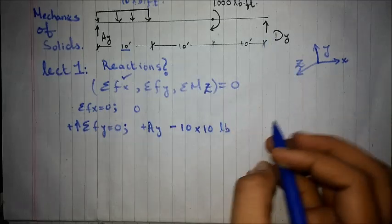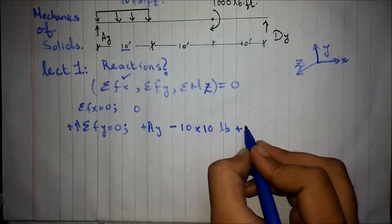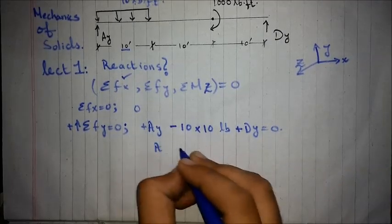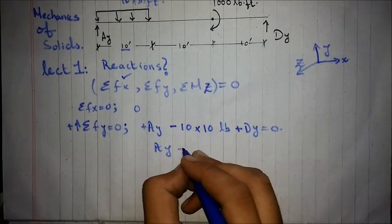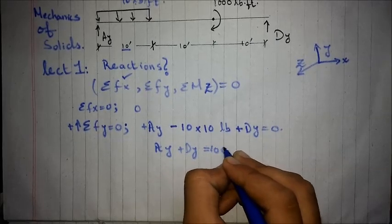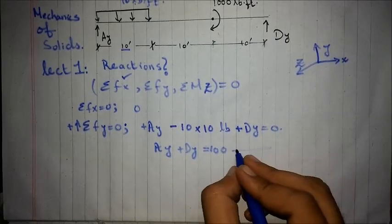And the reaction dy is acting in positive direction of y. So we get a net equation as, we name this as equation number 1.